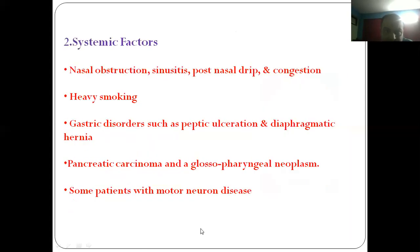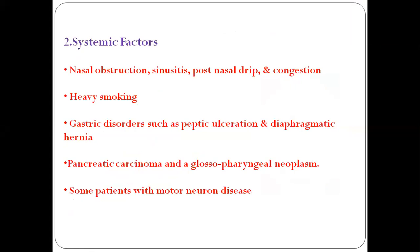The second category of the etiology of gag reflex is systemic factors, which are related to the body. These include nasal obstruction, sinusitis, post-nasal drip, congestion, heavy smoking, gastric disorders such as peptic ulceration and diaphragmatic hernia, pancreatic carcinoma, and glossopharyngeal neoplasm.